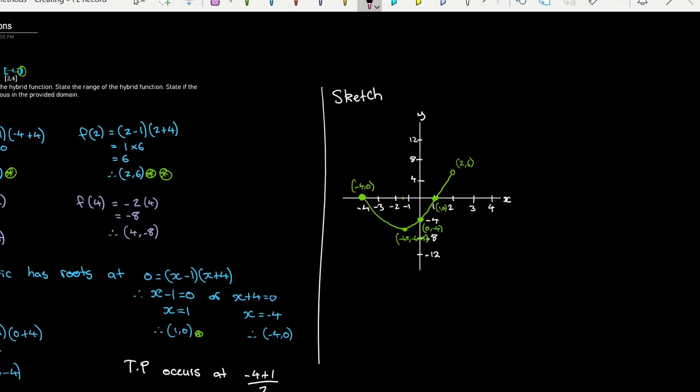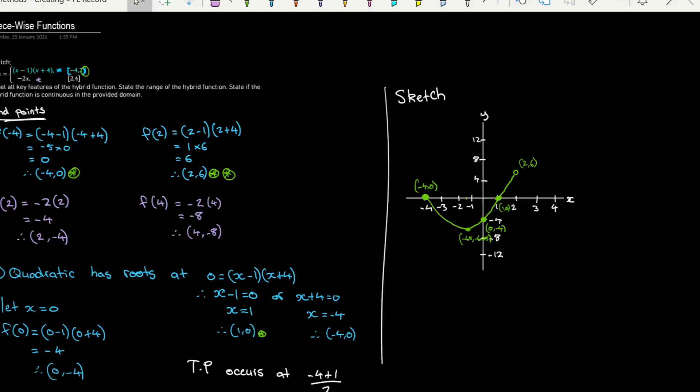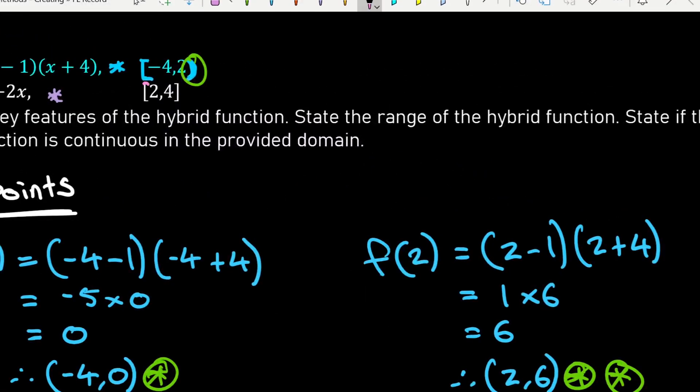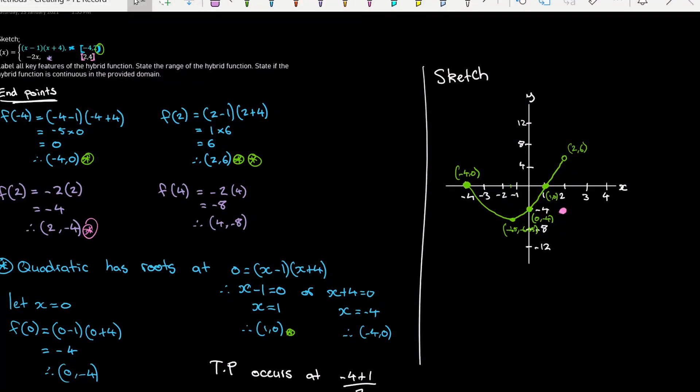And I'm just going to finish off by sketching my linear component. So I've got a linear function with a negative 2 gradient. And so we've got the point when x is 2, y is negative 4. And it is inclusive of that point. So I'll do a filled circle to indicate it's inclusive, because here I've got my square bracket, and it's going to be inclusive of the other end point. And it goes all the way down to negative 8.